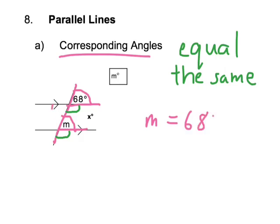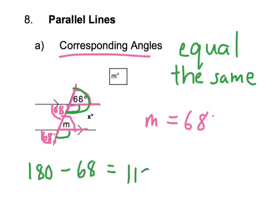We can also label the opposite angle as 68 degrees, and the corresponding one below as 68 degrees. To find the green angle, we subtract 68 from 180 because they're supplementary. 180 minus 68 equals 112 degrees. So all four of the supplementary positions are 112 degrees.